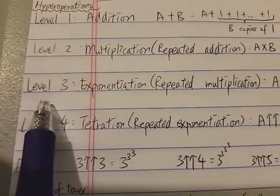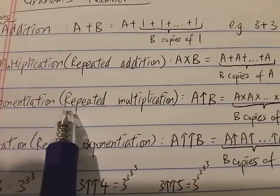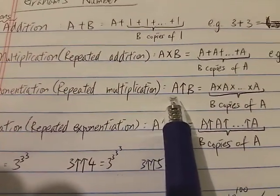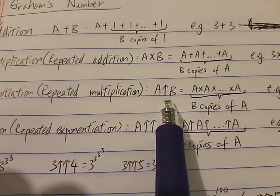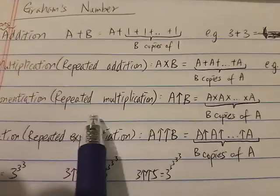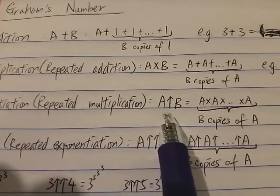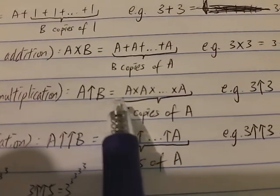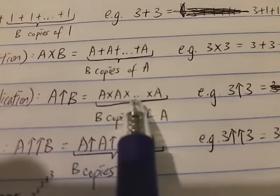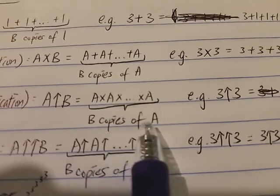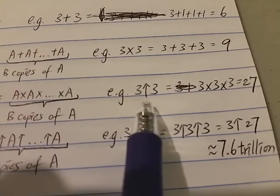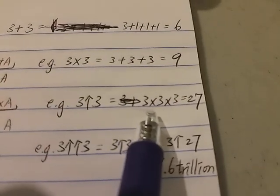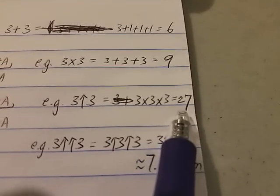On the third level, we have exponentiation, which is repeated multiplication. We can use an up-arrow notation to represent exponentiation. So A↑B just means A to the power of B — that is, A times A times A... with B copies of A. For example, 3↑3, or 3 to the power of 3, means 3 times 3 times 3, which is 27.